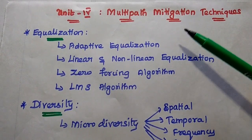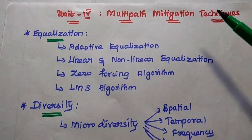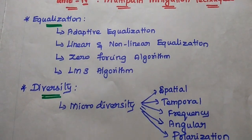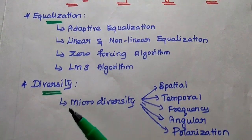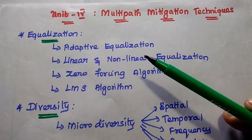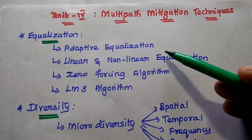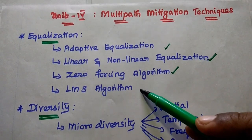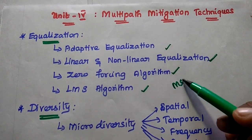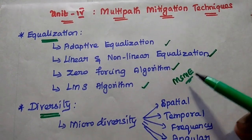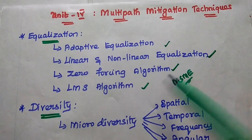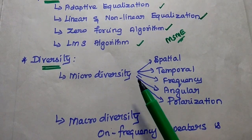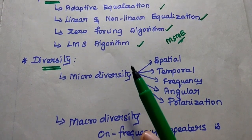The fourth unit is all about multipath mitigation techniques. Three topics are important: equalization, diversity, and RAKE receiver. In equalization, we have adaptive equalization, linear and non-linear equalization, zero forcing algorithm, LMS algorithm, and MMSE algorithm. You can concentrate either on equalization or diversity. The zero forcing algorithm and LMS algorithm are very important.